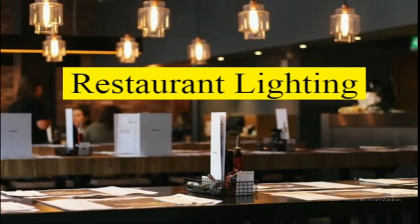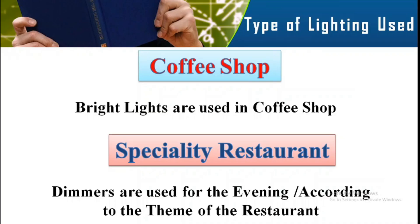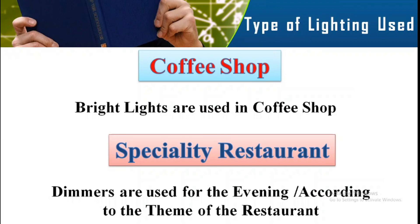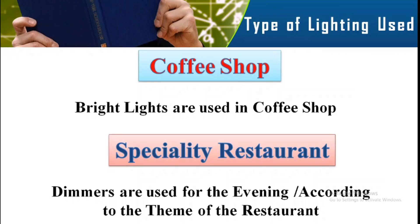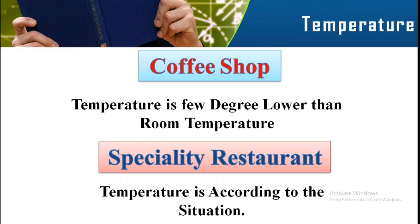Regarding lighting: in a coffee shop, bright colors and bright lighting are used — the restaurant is fully lit up. In a specialty restaurant, since it opens in the evening, dimmer lighting is used to match the evening environment, and light is focused more on the tables.